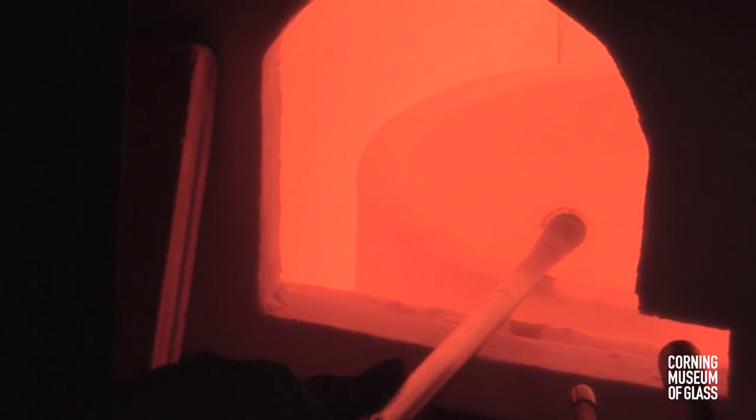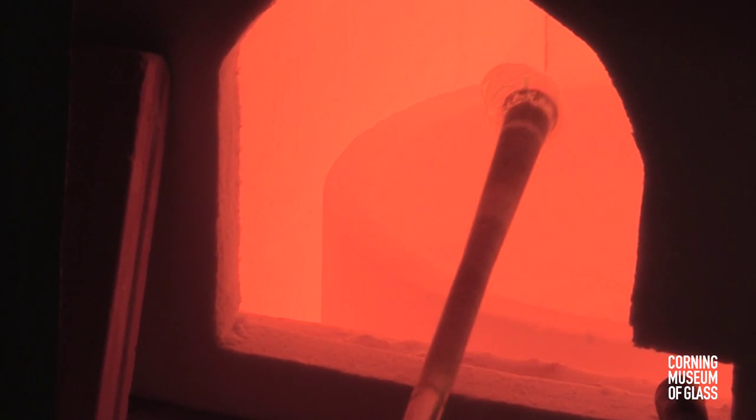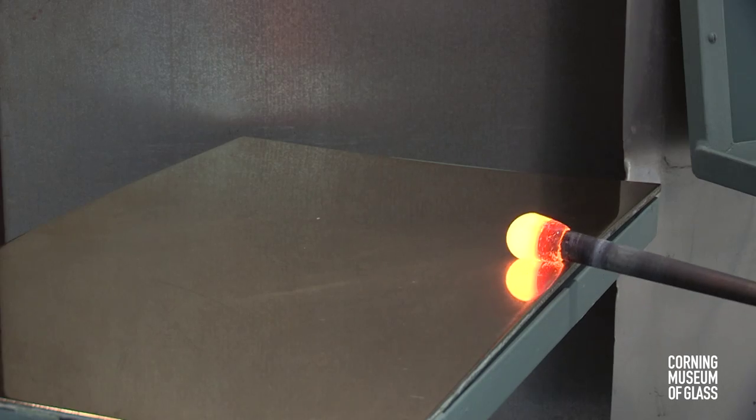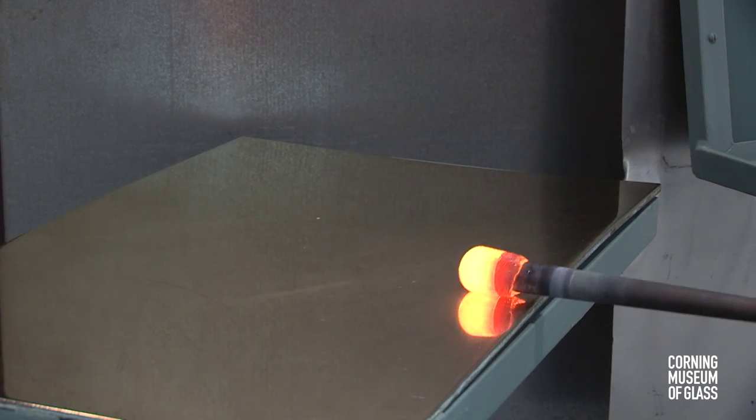Next, the knop is made. It begins as a small gather of glass on the end of a blowpipe. It's marvered, and a bubble is blown into the glass.